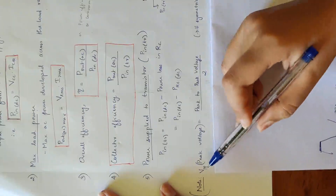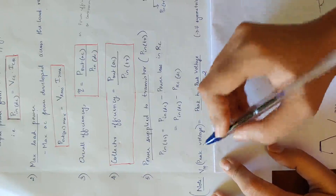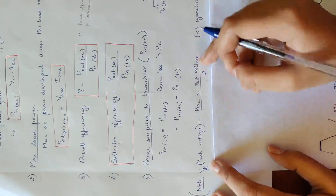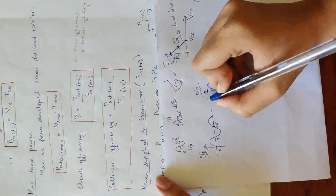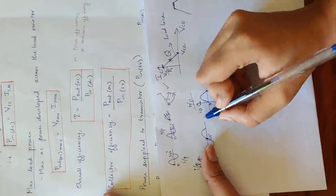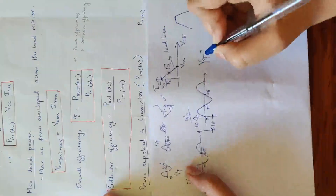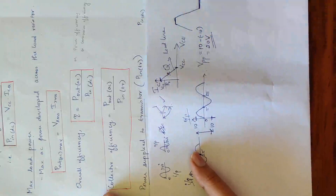You need to know the basics from first year. VP is peak voltage. Peak-to-peak voltage divided by 2 gives the peak value for a symmetrical waveform. For example, if the output waveform has a peak-to-peak voltage of 20V, then the peak voltage is 10V.